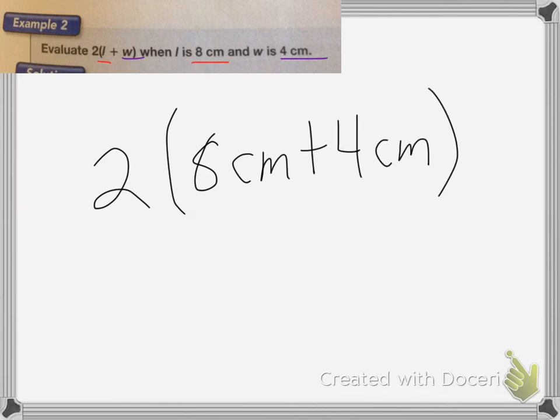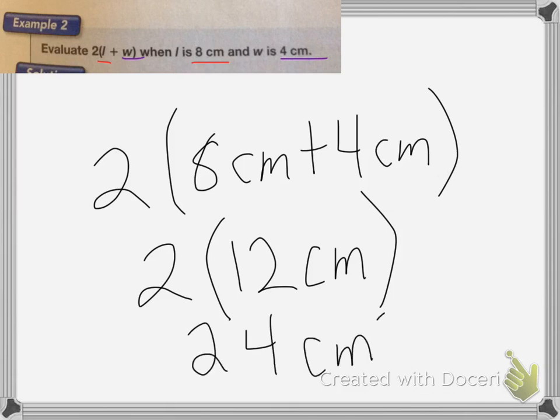On this next one, evaluate 2 times L plus W when L is 8 centimeters and W is 4 centimeters. So again, we're going to put in 8 centimeters for L and 4 centimeters for W. So I end up with 2 times 8 centimeters plus 4 centimeters. Now we do what's inside the parentheses first, so we end up with 2 times 12 centimeters, which is equal to 24 centimeters squared.